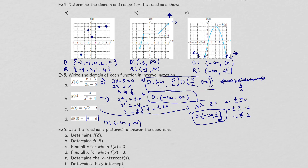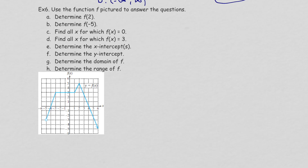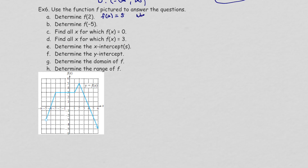The next example involves reading function values from a graph. When asked to find f(2), it means: when x = 2, what is y? On the given graph, when x = 2, y = 5. So f(2) = 5, or when x is 2, y is 5. The ordered pair is (2, 5).